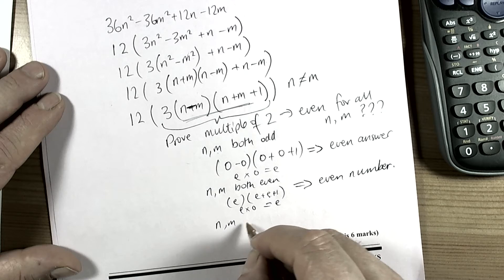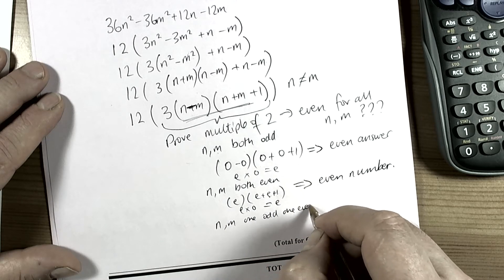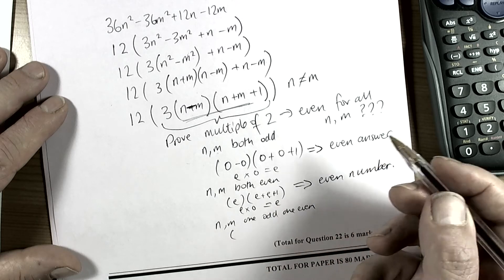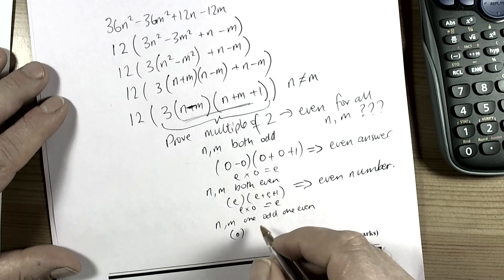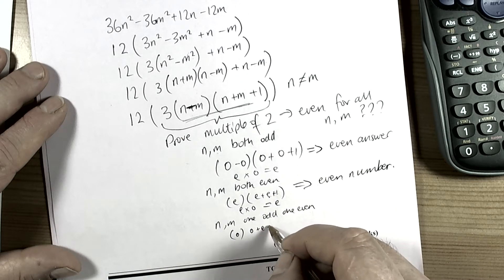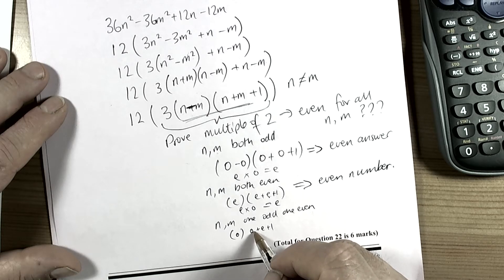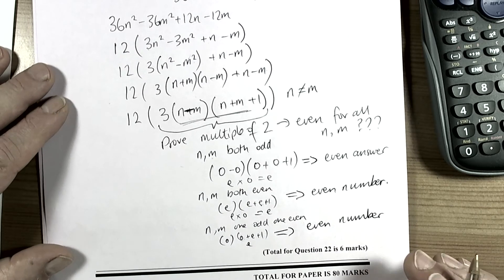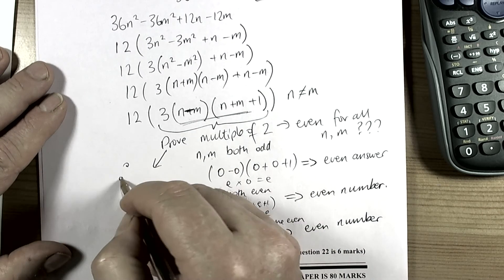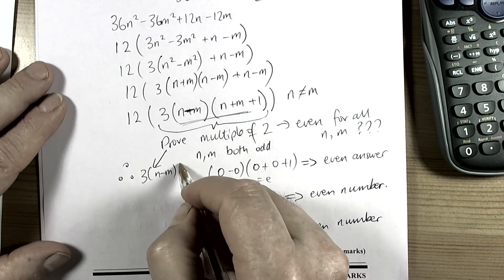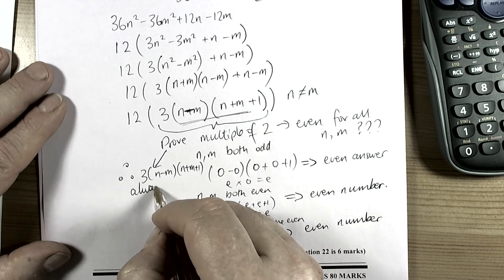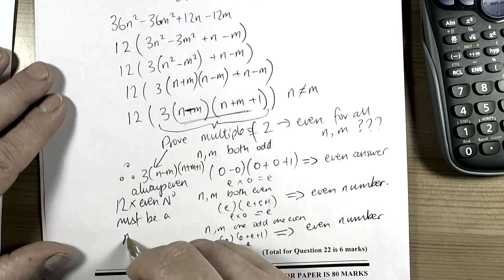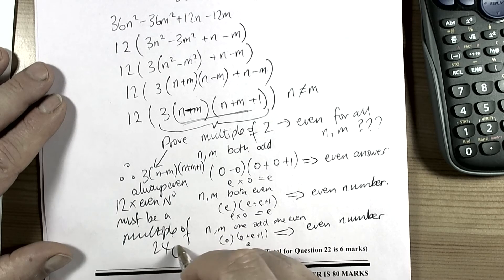And if n and m are one odd and one even: in the first bracket we have an odd minus an even — for example 5 − 4 — which is odd. Then an odd plus an even plus 1 — for example 3 + 4 = 7 + 1 = 8 — which is even. So this always gives an even number. Therefore, 3(n − m)(n + m + 1) is always even, and 12 times an even number must be a multiple of 24. QED.